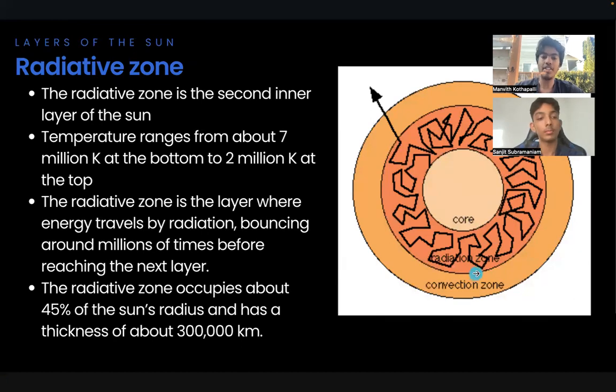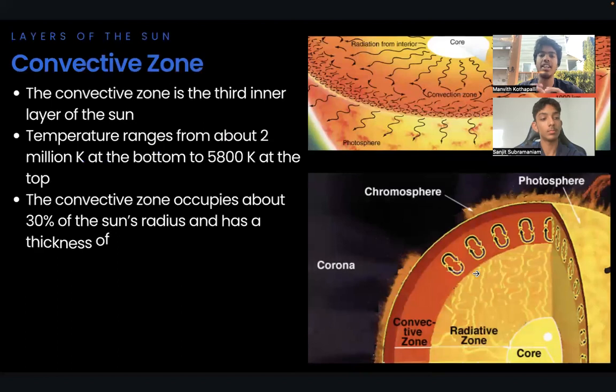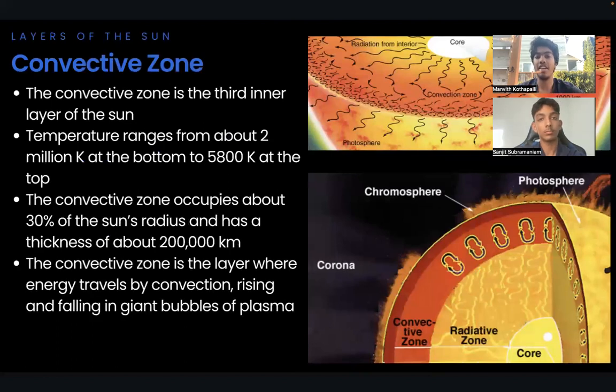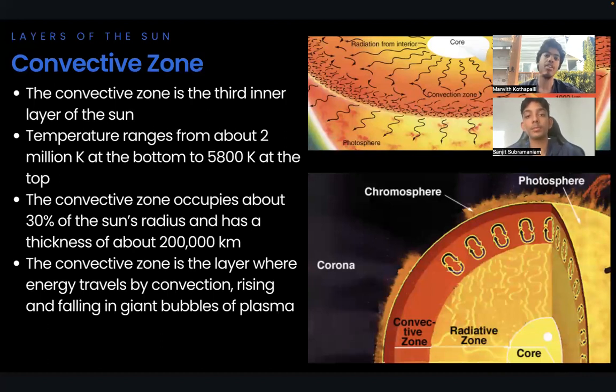Now, let's talk about the next layer, the convective zone. The convective zone is the third inner layer of the Sun, where the temperature ranges from 2 million Kelvin at the bottom to 5,800 Kelvin at the top. The density ranges from 0.2 grams per centimeter cubed at the bottom to 2 times 10 to the power of negative 4 grams per centimeter cubed at the top.